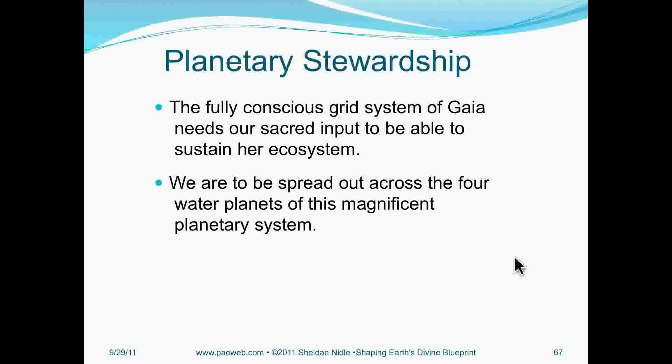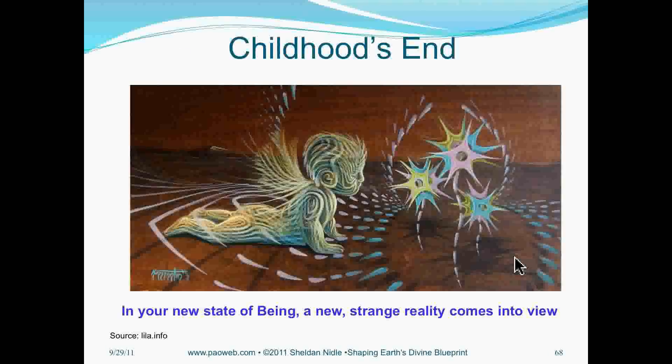So as we can see, as part of the stewardship, the fully conscious grid system of Gaia needs our sacred input to be able to sustain her ecosystem. We are to be spread out across these four water worlds, which we explained, our Venus, Gaia, which we're on right now, Mars, and then this reconstituted planet, which I am calling Pax.